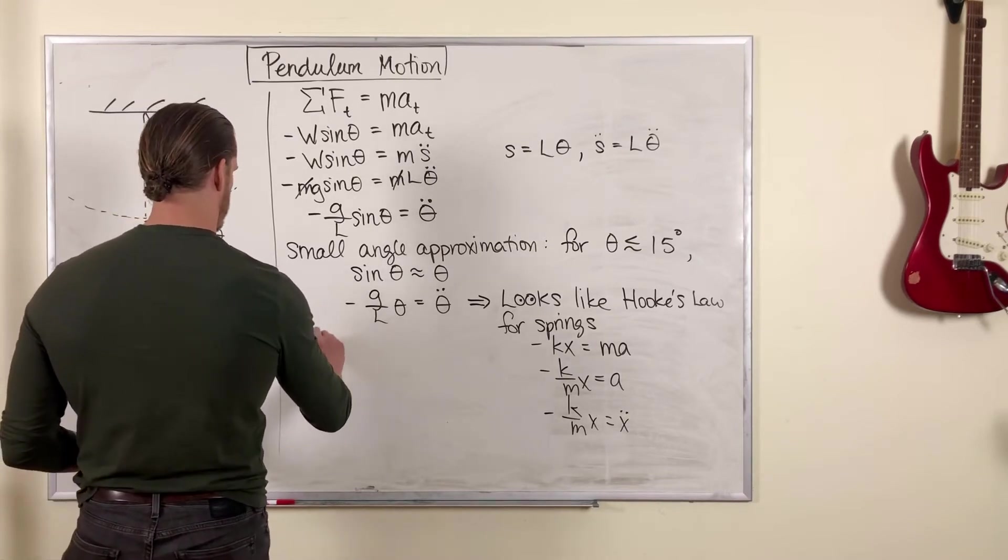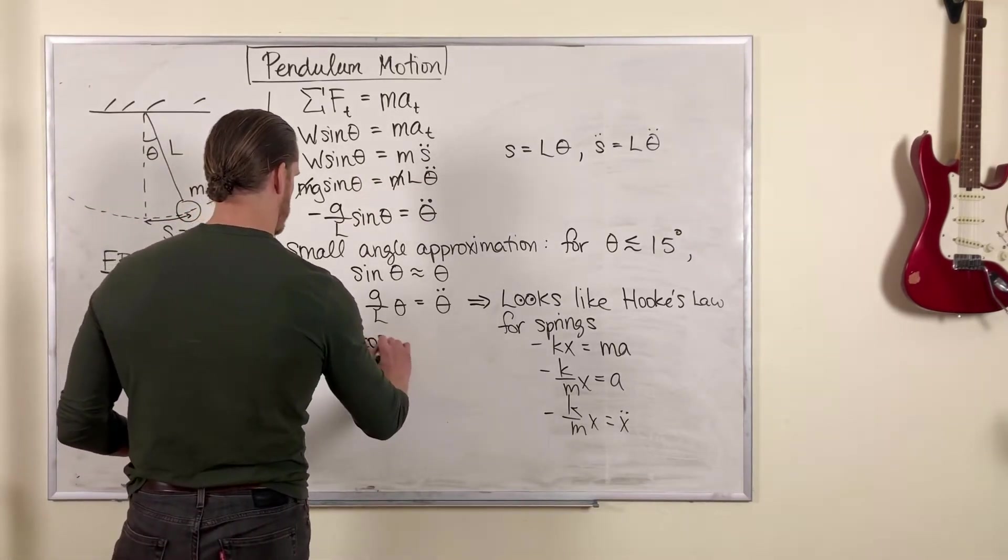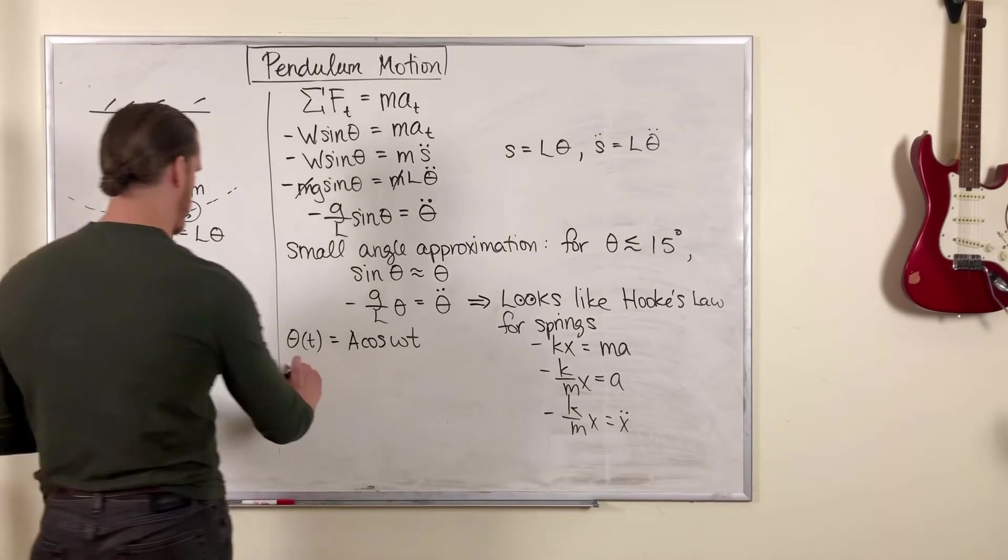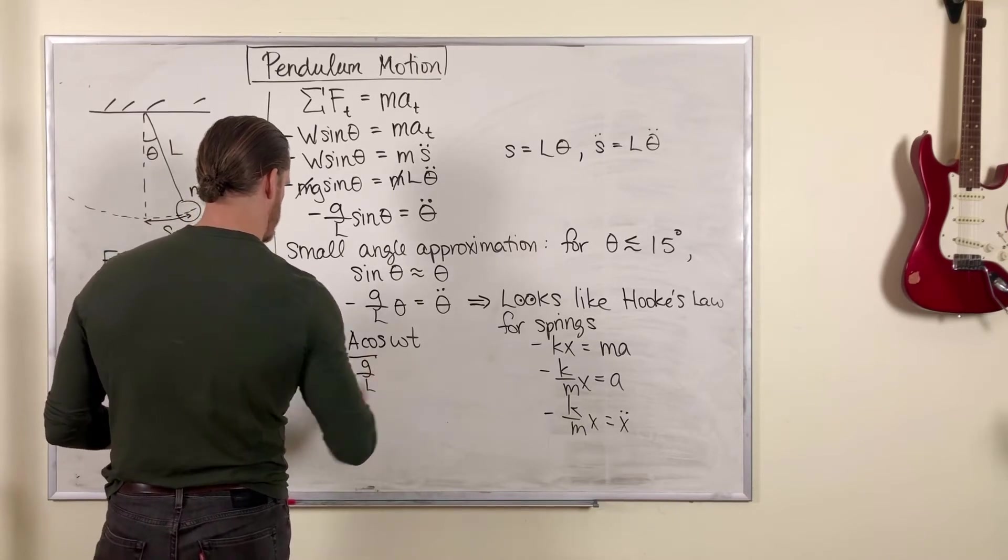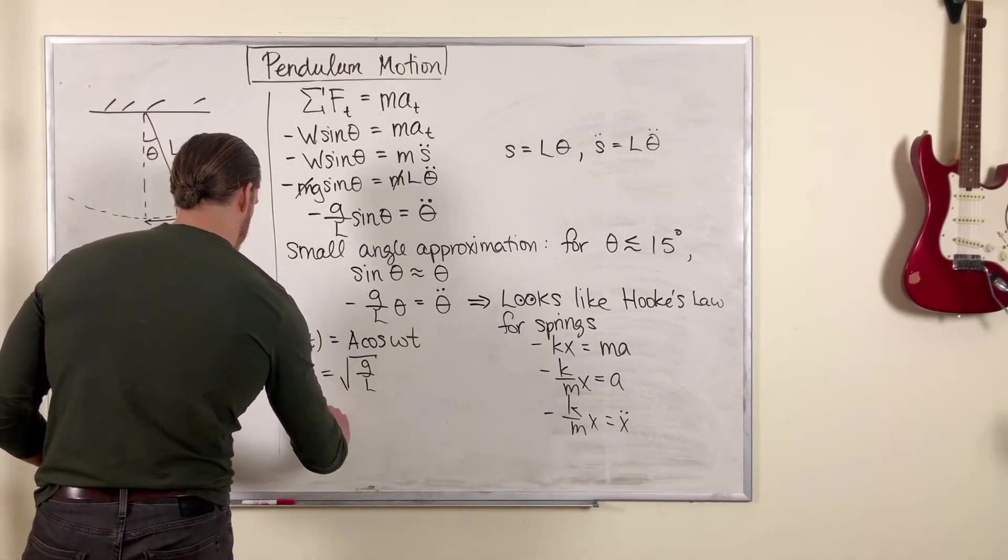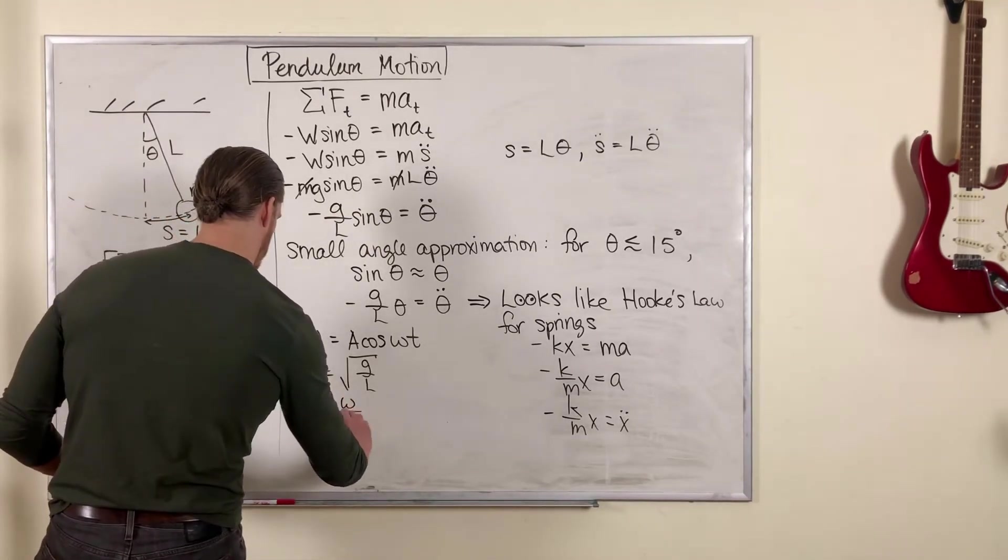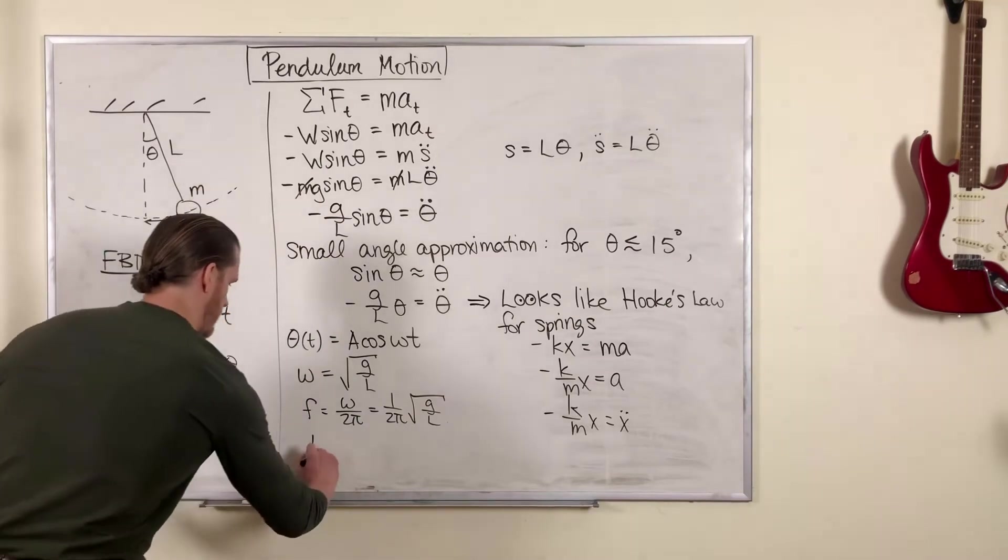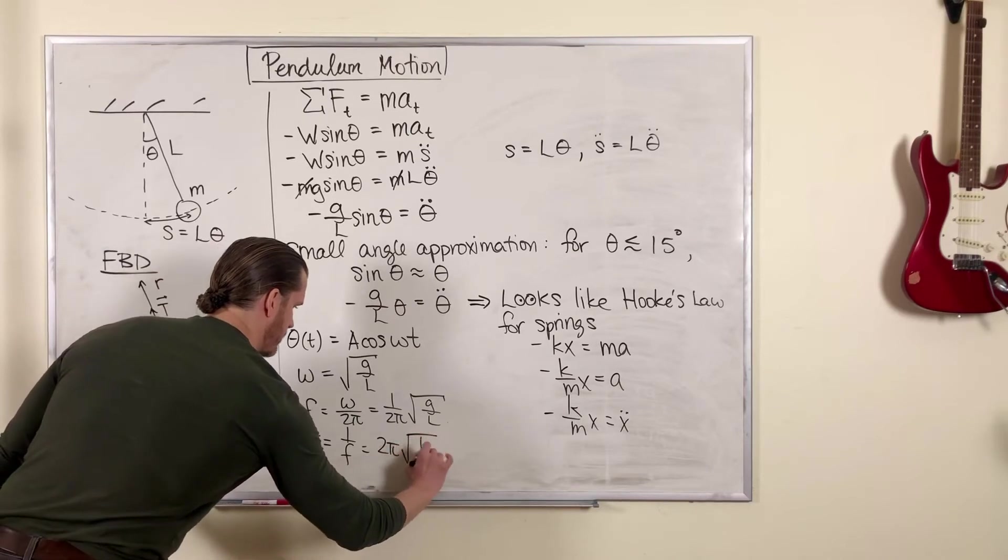So what we found when we did this analysis earlier in the chapter is that you have an equation for the position as a function of time, or in this case the angle as a function of time. It's A cosine omega T, possibly a phase, where omega equals square root G over L. And that means you can write a frequency. This frequency is 1 over 2 pi times omega. And period is 1 over F, or 2 pi times root L over G.